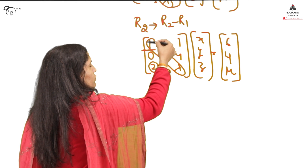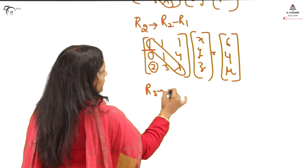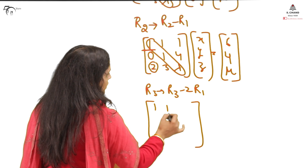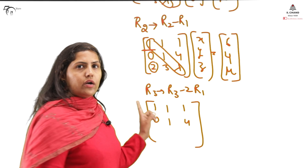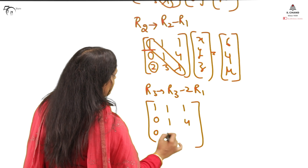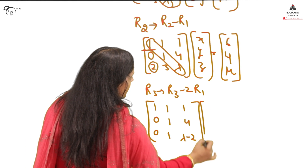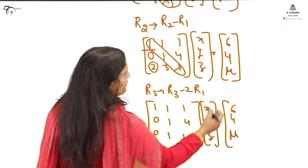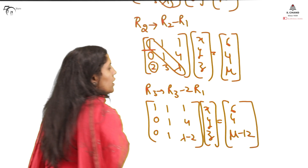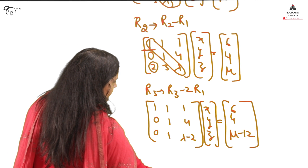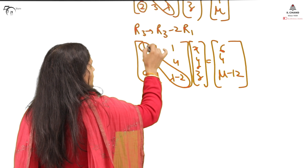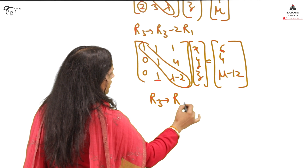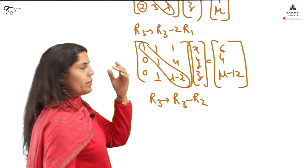Next, to eliminate the element 2 below the diagonal in the third row, we apply R3 → R3 − 2R1. This gives: 2−2=0, 3−2=1, λ−2 for the third row of A, and μ−12 for the B column. The transformed matrix now has rows [1 1 1], [0 1 4], [0 1 λ−2] with B values 6, 4, μ−12.